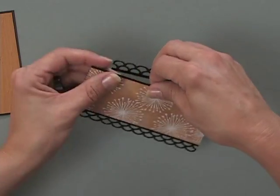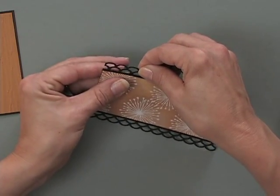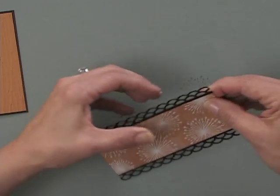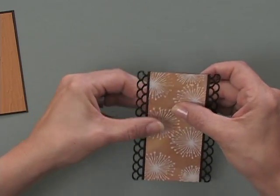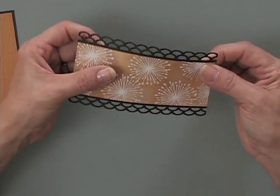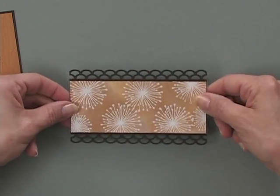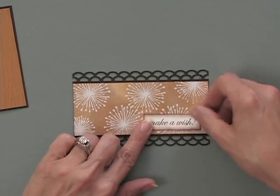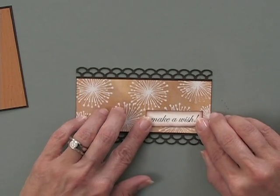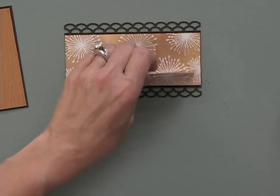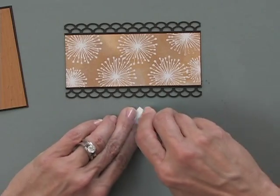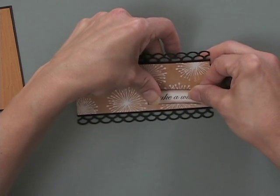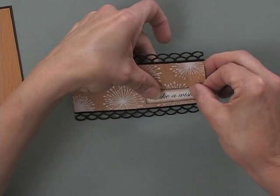Just like that. And then the other side I'm going to do the same way. What a pretty little focal image that has become now. I'm going to add my greeting right down here. And then I'm going to finish it off with a little bit of dark chocolate ribbon.